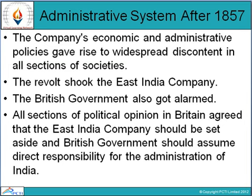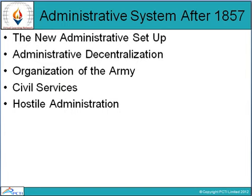Next is the administrative system after 1857. The company's economic and administrative policies gave rise to widespread discontent in all sections of society, and the revolt shook the East India Company. The British government also got alarmed, and all sections of political opinion in Britain agreed that the East India Company should be set aside and the British government should assume direct responsibility for the administration of India. Topics to be covered include: the new administrative setup, administrative decentralization, organization of the army, civil services, and hostile administration.